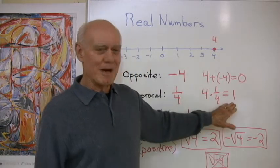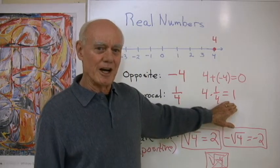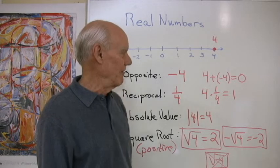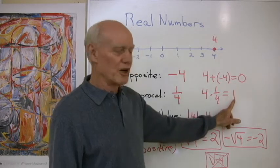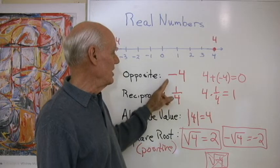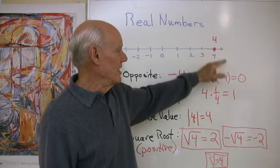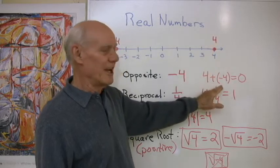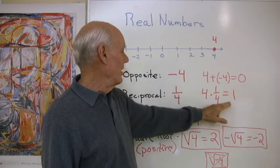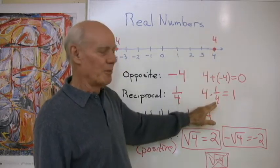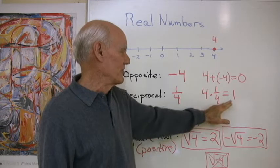The reciprocal of four is one-fourth because one-fourth is the number I multiply four by to get one. And one is a special number in mathematics because it's the number you multiply other numbers by, and it doesn't change their value. So zero and one are special numbers in mathematics, and we need a way to get there from a real number like four. So to get to zero from four, we add negative four. To get to one from four, we multiply by its reciprocal one-fourth.